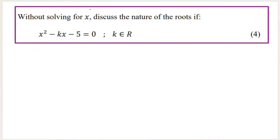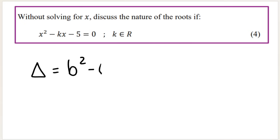The last question is a little bit more difficult: without solving for x, discuss the nature of the roots given a quadratic equation. It is in standard form — equal to zero with descending powers of x. There's a k in this question and k is an element of real numbers. Don't panic just because there's a k — we still need to work out the discriminant. So write down our equation for the discriminant.